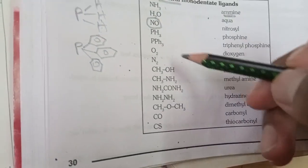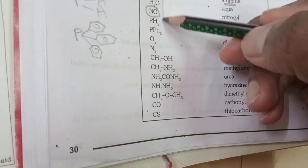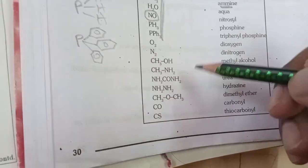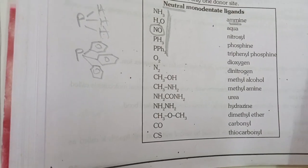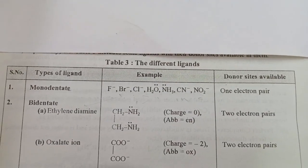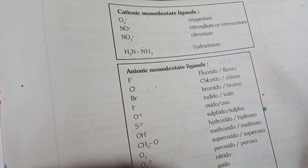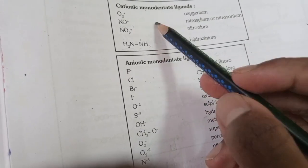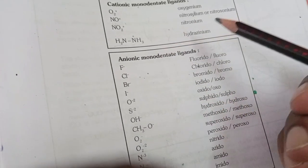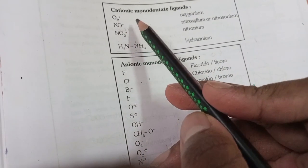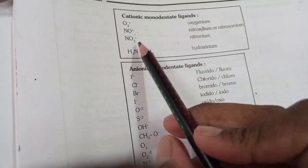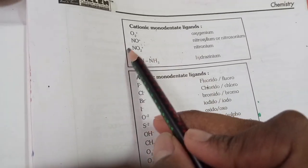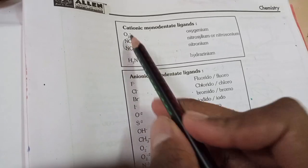O2 and N2 are also neutral ligands. Now let's look at cationic ligands. O2 as a cation — that's not typical. Nitrosyl cation (nitrosonium, NO⁺) is the cationic example. N2 as dinitrogen is also noted here.